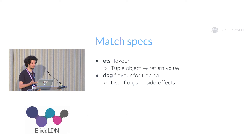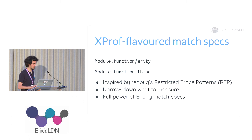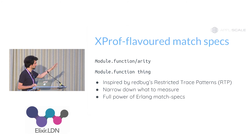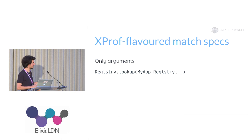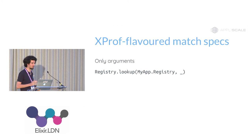In DBG, you can also add action functions which look like local function calls but actually are not. Let's see some examples of the format you can put in the X-Prof query text box. You can put the module/function, and then module/function followed by something like the part of an anonymous function. For example, to filter on arguments — measure Registry.lookup calls when it is called only on 'myapp.registry', ignoring all other registries.